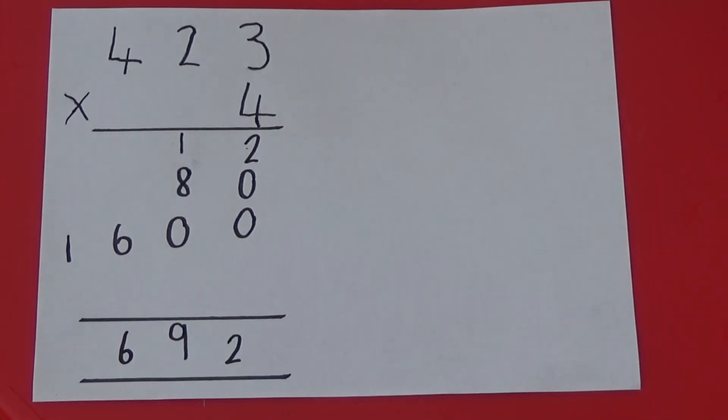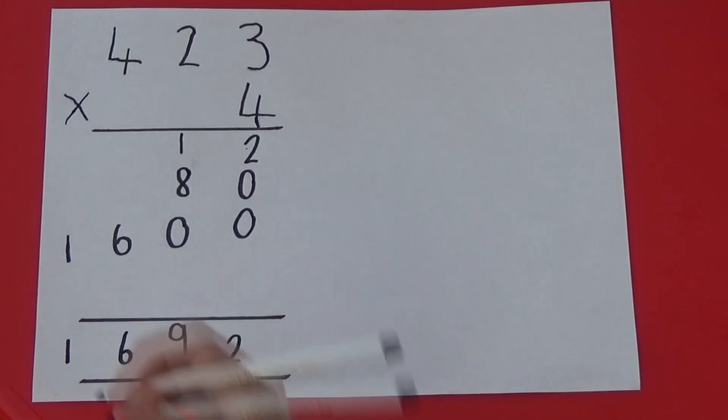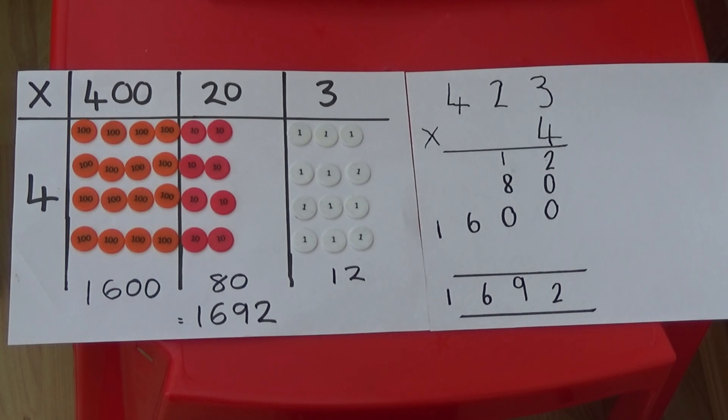And finally, 1,000 add nothing is 1,000, so we can write 1 in the thousands column. This gives us the same answer as our grid method, which is 1,692.